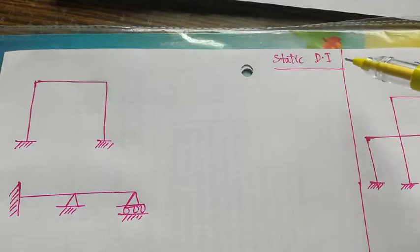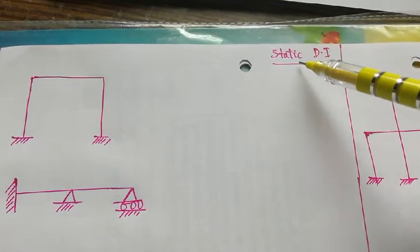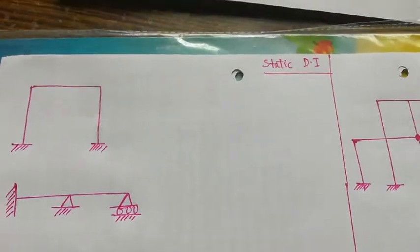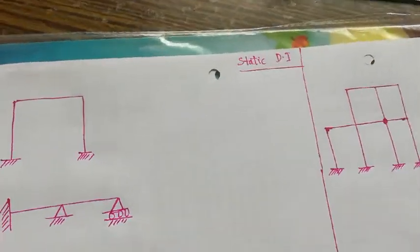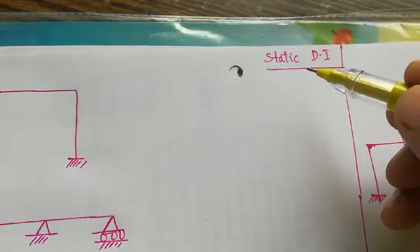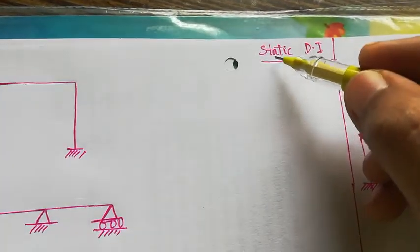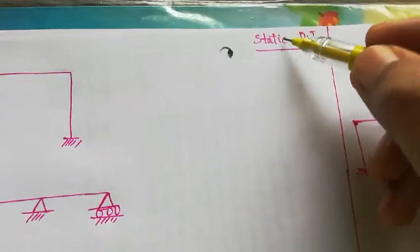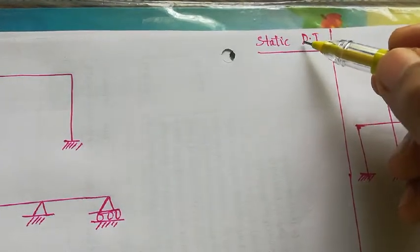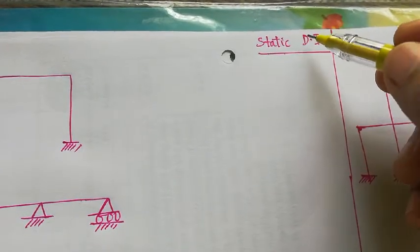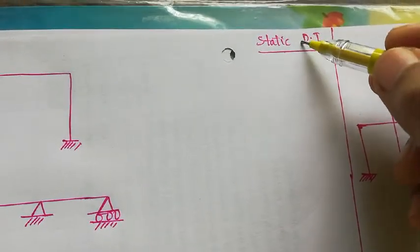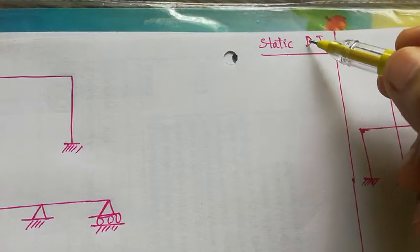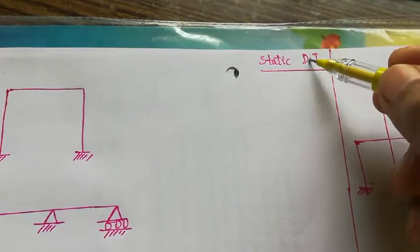Hello friends, today we are dealing with static degree of indeterminacy. What do you mean by static degree of indeterminacy? When the body or the structure is stressed, how many forces do you require to calculate the internal reactions?